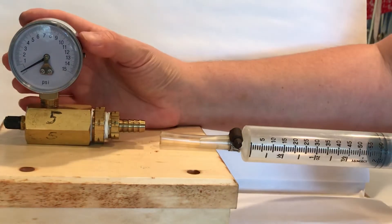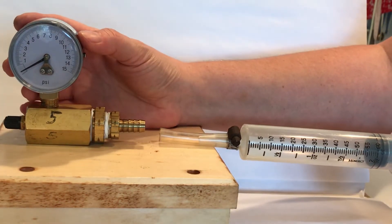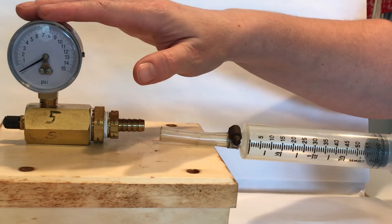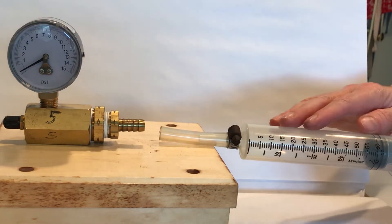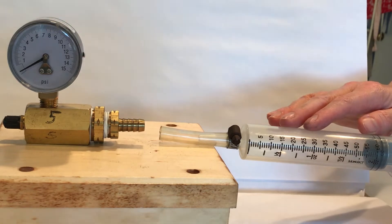Hi students! In this part of the lab we're going to take a look at what happens to the pressure on this pressure gauge when we change the volume of the gas in the syringe.